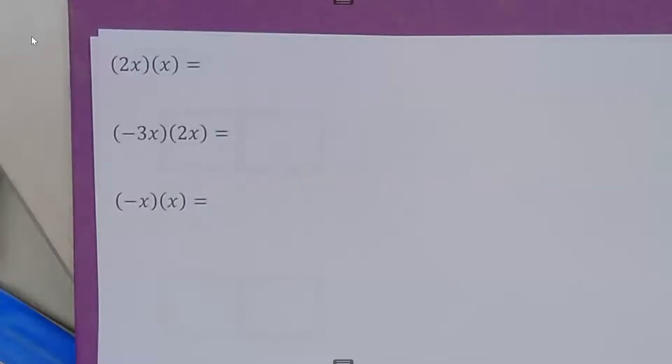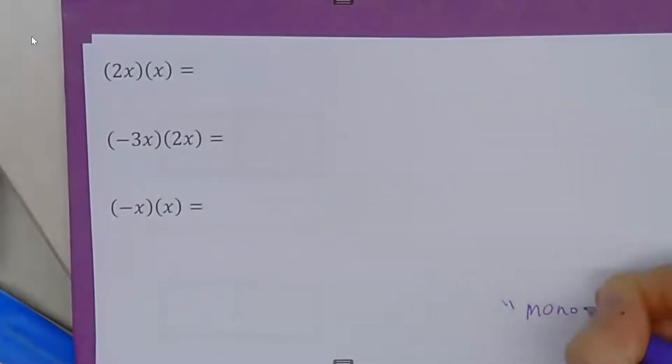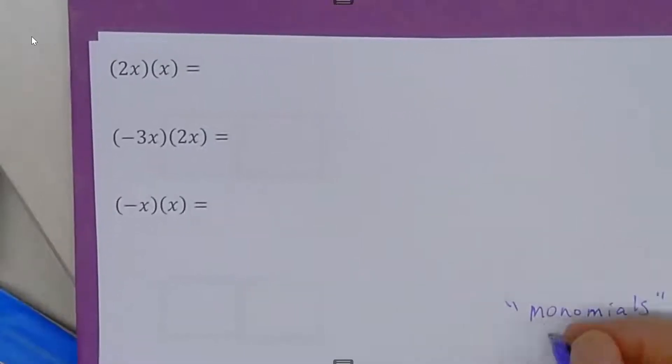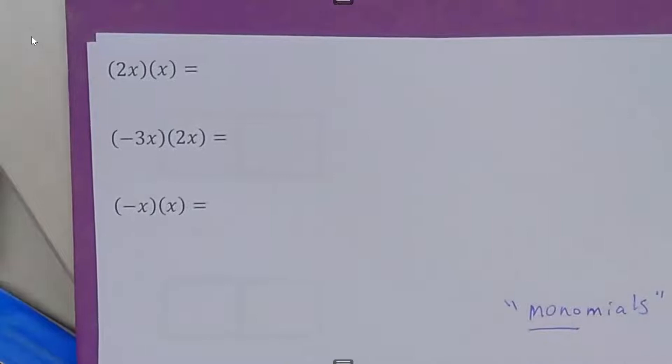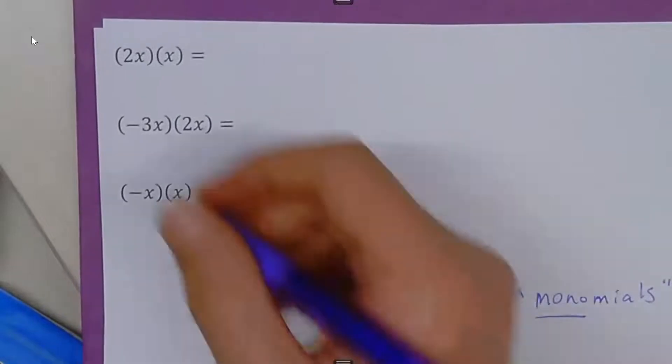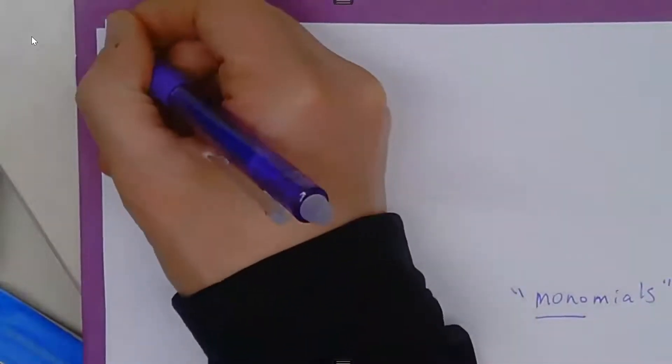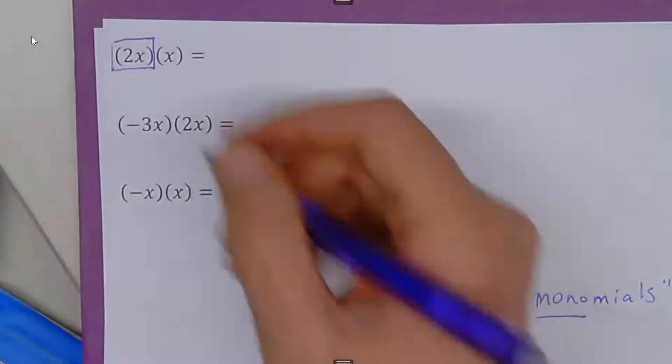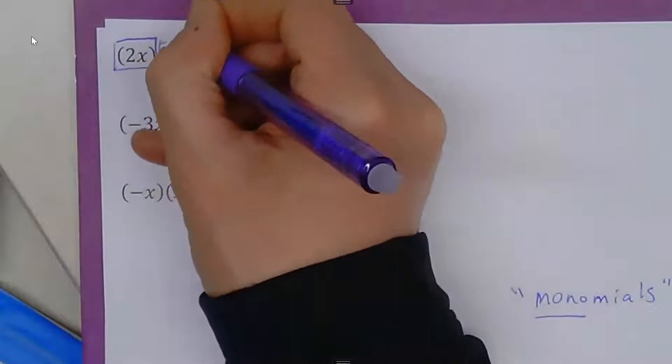In this video, we show how to multiply monomials, and mono means 1, so a monomial is one term, like 2x or like x.